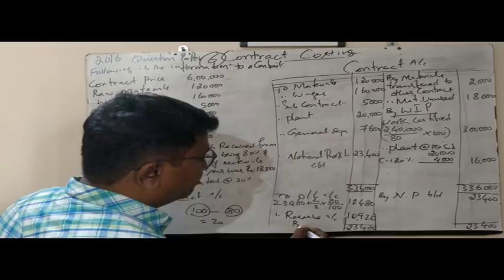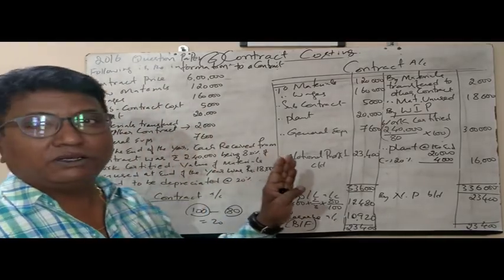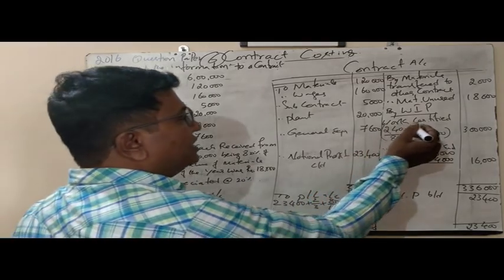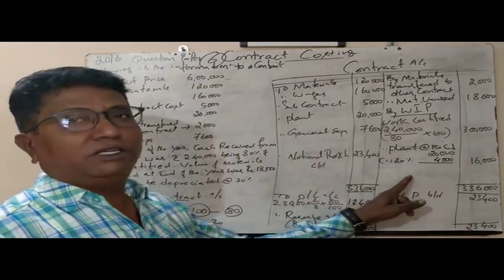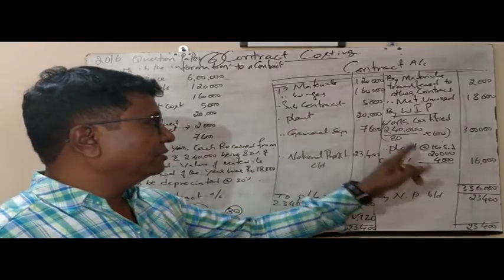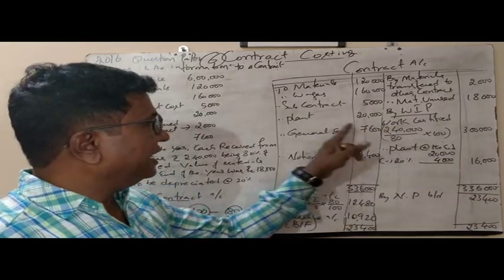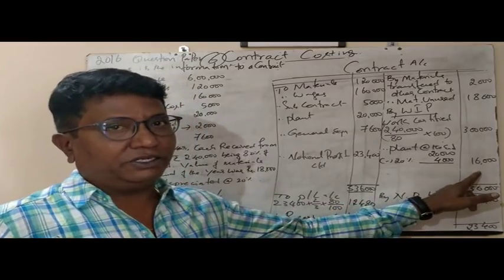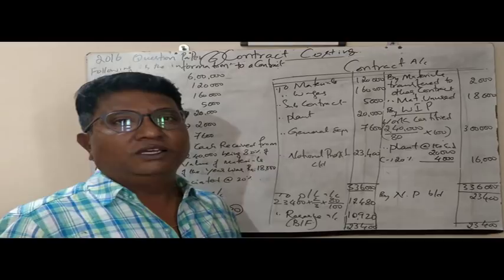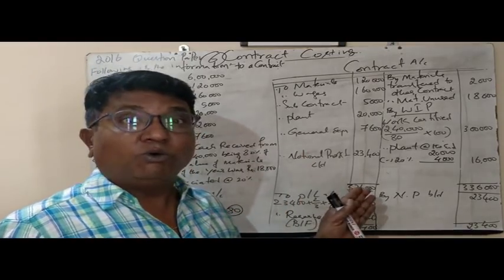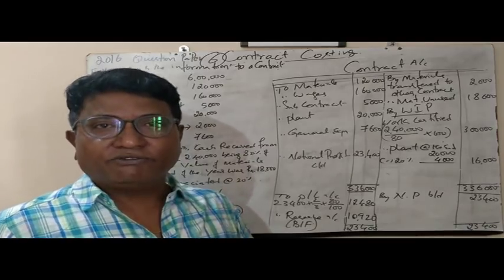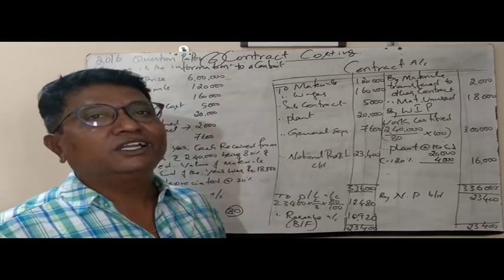The remaining 10,920 rupees is transferred to reserve as the balancing figure. This is how we solve the 2016 question paper for 6 marks. The key points are: work certified must be calculated (not given directly), and depreciation must be calculated at 20% on plant. Alternatively, you can write depreciation on plant as 4,000 directly. If you found this helpful, please subscribe to my channel Study Circle and share with your friends. Thank you and see you in the next video.